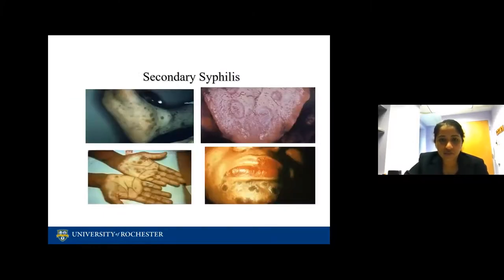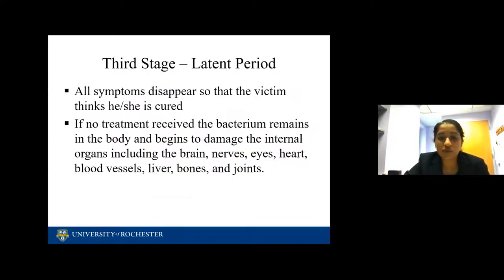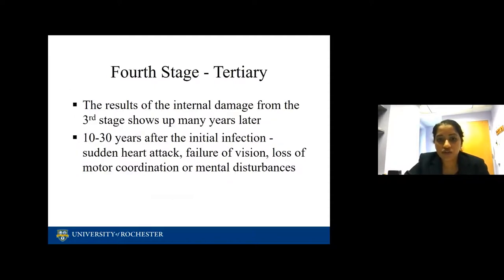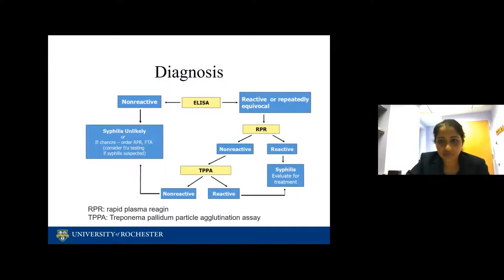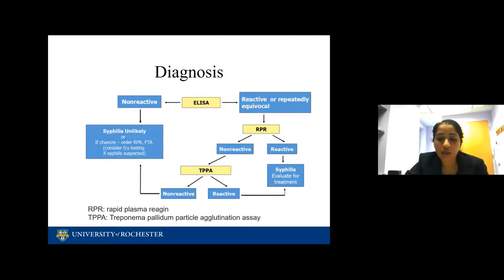The third phase — in some ways the very dangerous phase — all symptoms disappear, so the victim thinks they are cured. However, if there's been no treatment, the bacterium remains in the body and begins to damage internal organs. The fourth stage of tertiary syphilis, the result of internal damage, shows up 10 to 30 years later with sudden heart attacks, failure of vision, loss of motor coordination, and mental disturbances. Initial diagnosis includes clinical presentation, dark field microscopy, and serology. Treatment is penicillin. I always order both the RPR and TPPA — you should contact your lab to see if they want you to proceed with an ELISA test first.